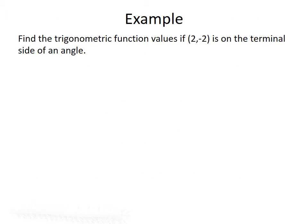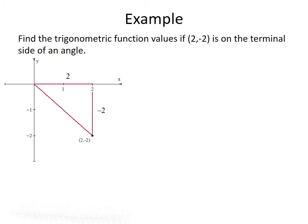Let's look at an example. We want to find the trigonometric function values if the point (2, -2) is on the terminal side of an angle. If we sketch out this angle with the initial side on the x-axis and the terminal side going to the point (2, -2), we can see that it makes a right triangle with a horizontal leg of 2, a vertical leg of -2, and a hypotenuse that we don't know.